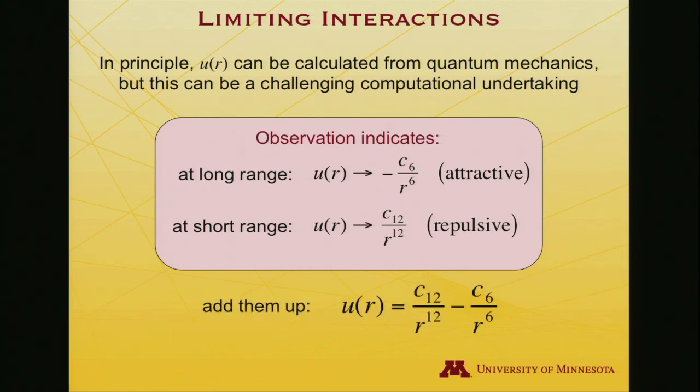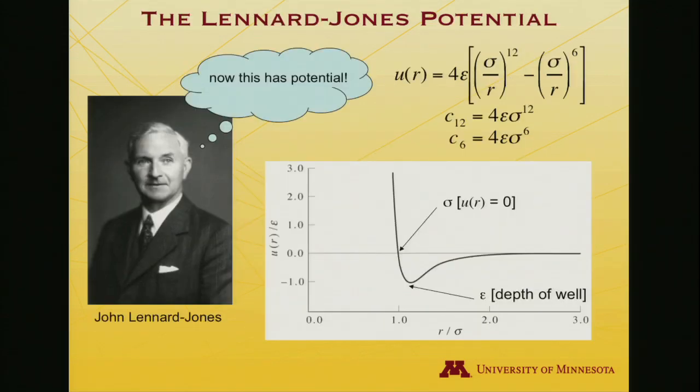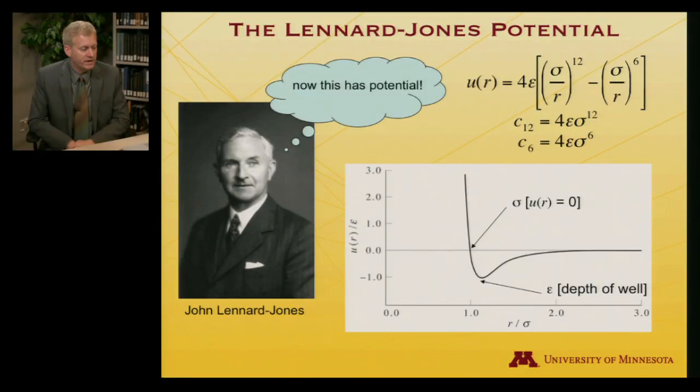If I add them together, I could write U of R, the potential energy function, as C₁₂ over R to the twelfth, minus C₆ over R to the sixth. That kind of functional form was really first explored in a lot of detail by John Lennard-Jones, and he wrote it in a slightly different way. It's called the Lennard-Jones potential. Generations of scientists have begun their careers believing that there was someone named Lennard and someone named Jones. In fact, that is not true. There was simply a single Lennard-Jones.